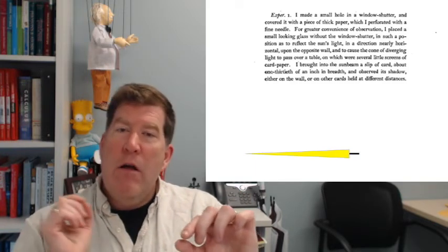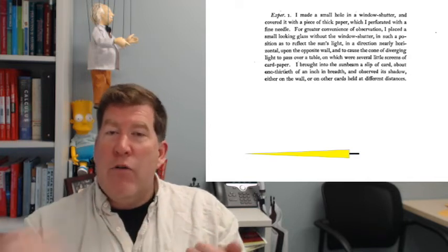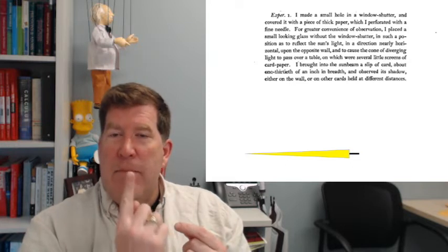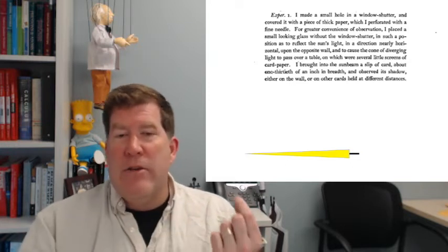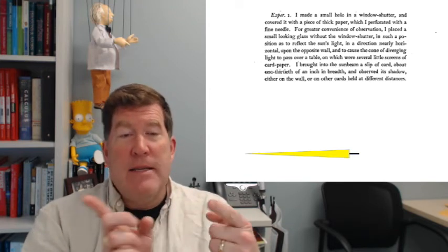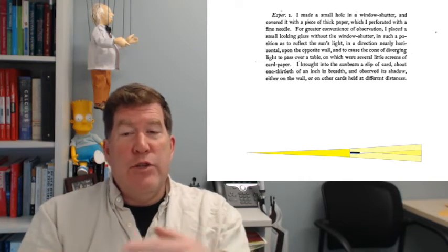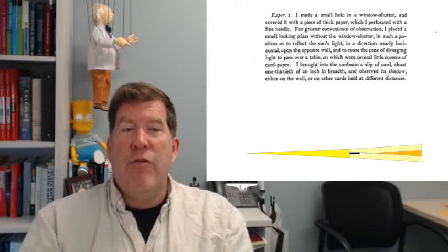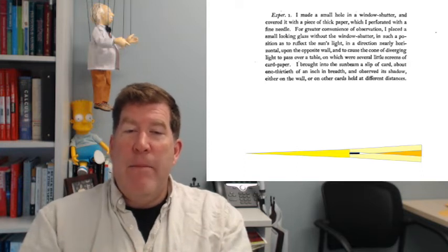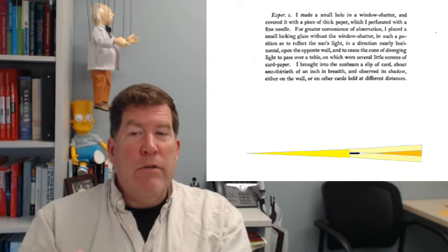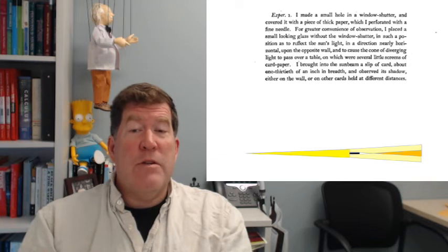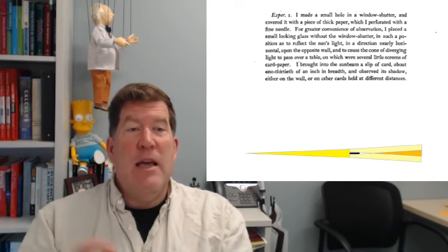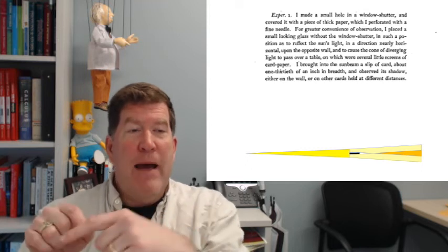He said he made a small hole in a window shutter, allowed sunlight to come through. He directed that sunlight across the room. And so he had a cone of diverging light, and he put a little piece of paper into the path of that beam, on edge. Then he looked at the shadow that was created as the light passed to either side of that small card and produced two smaller expanding cones on the far side that overlap with each other. And that overlap is the crucial bit of this, right? If you think about that overlap in terms of light behaving like particles, you would have one expectation for what should happen. If you think about that in terms of light behaving like waves, you see something very different. And what Young saw was the phenomenon that you would expect to see if the light is behaving like a wave. So you have sources of waves passing around either side of this.